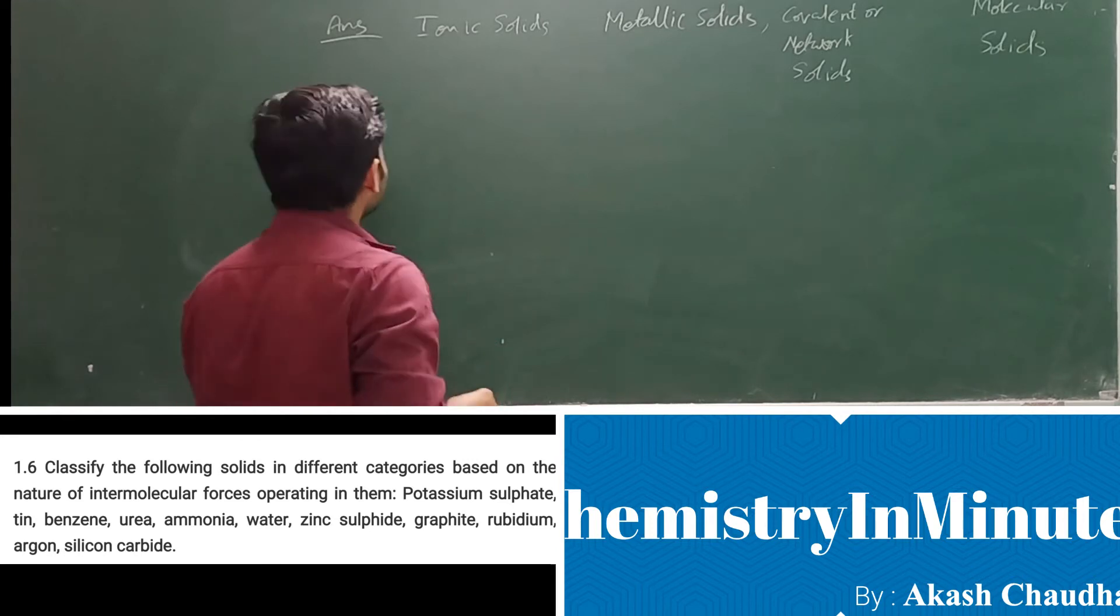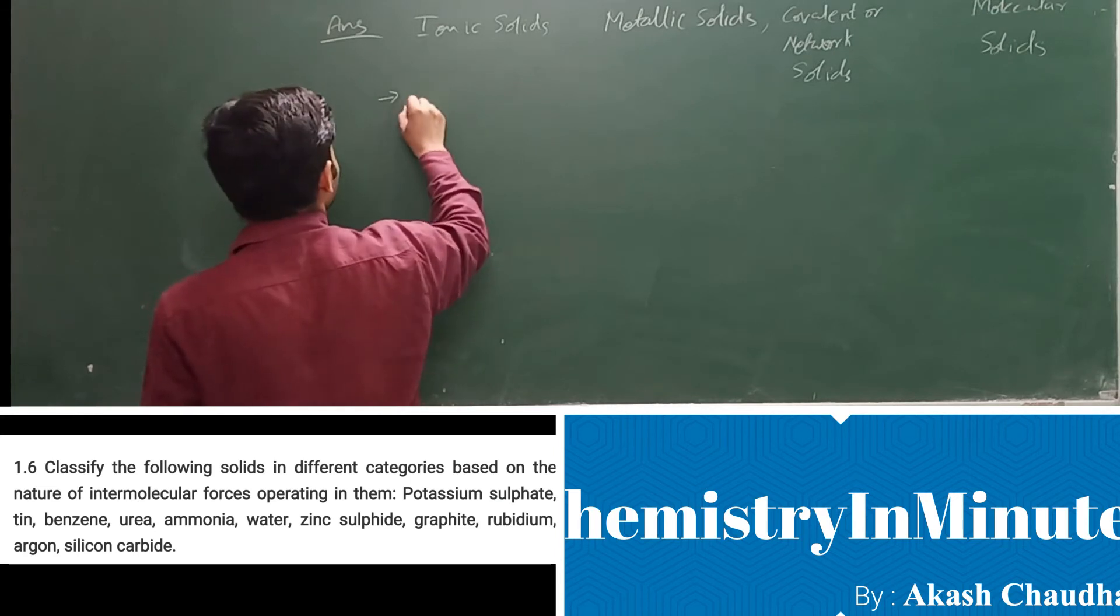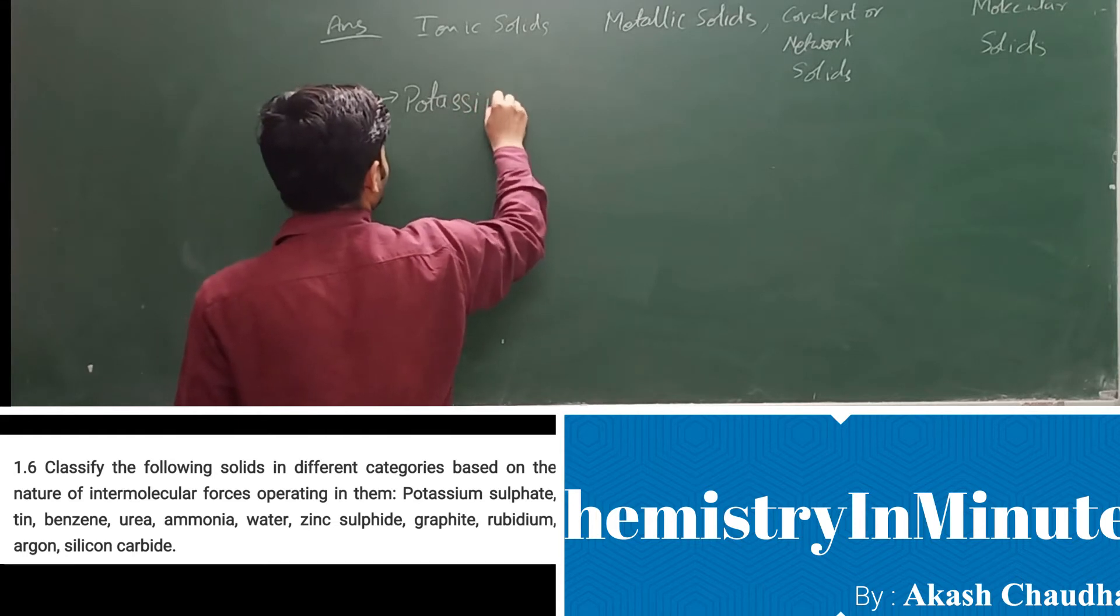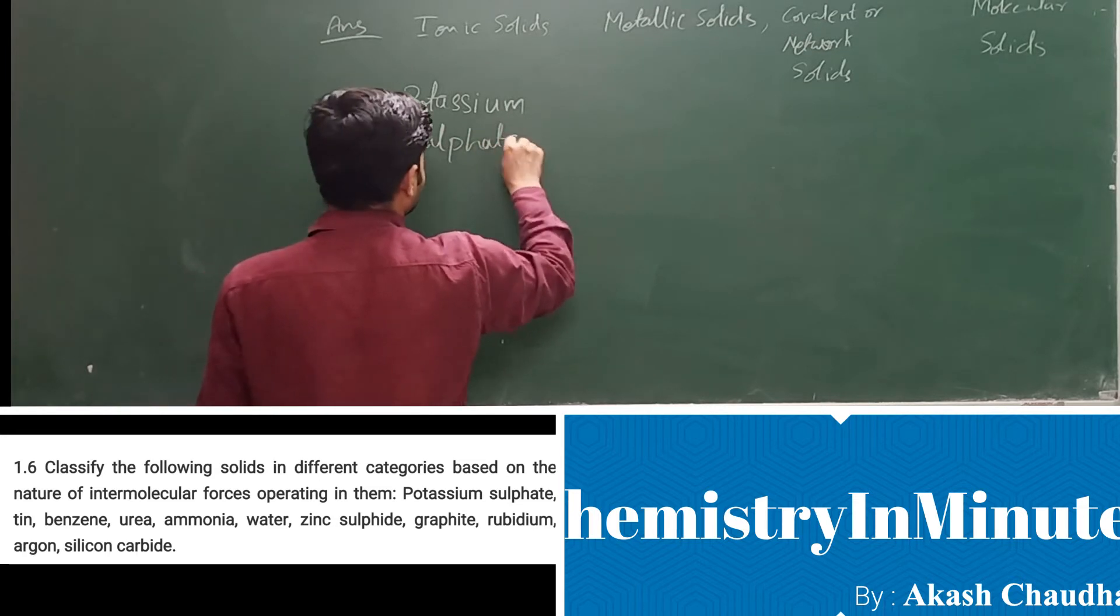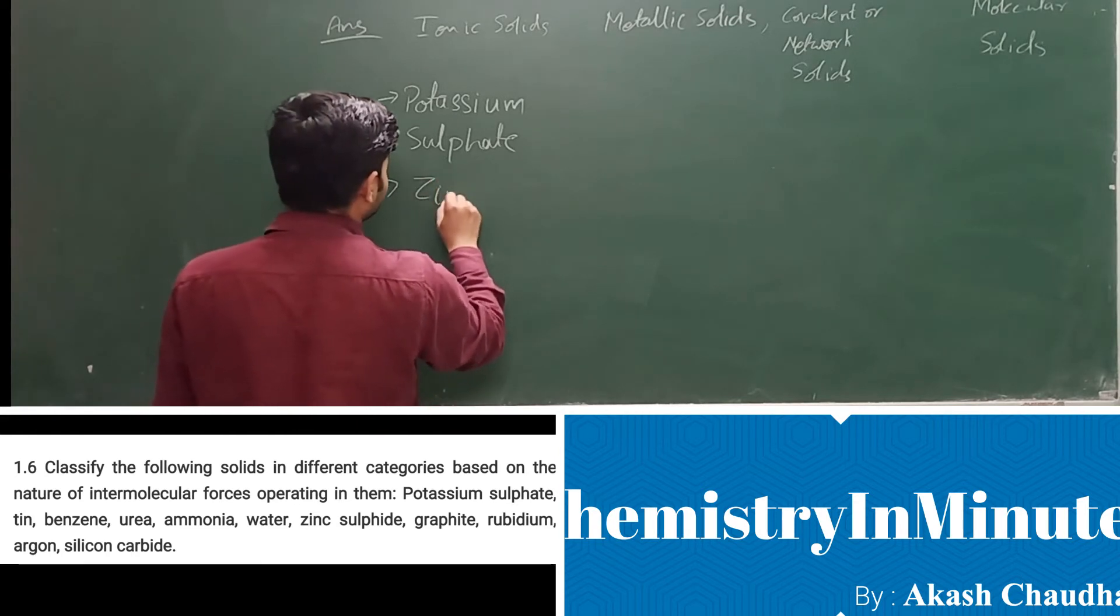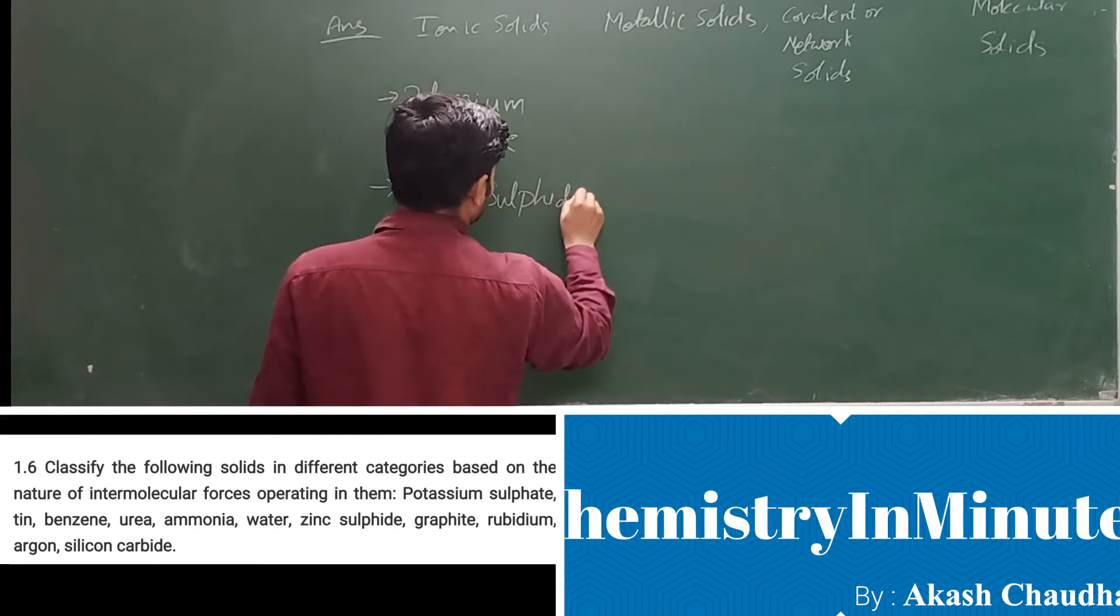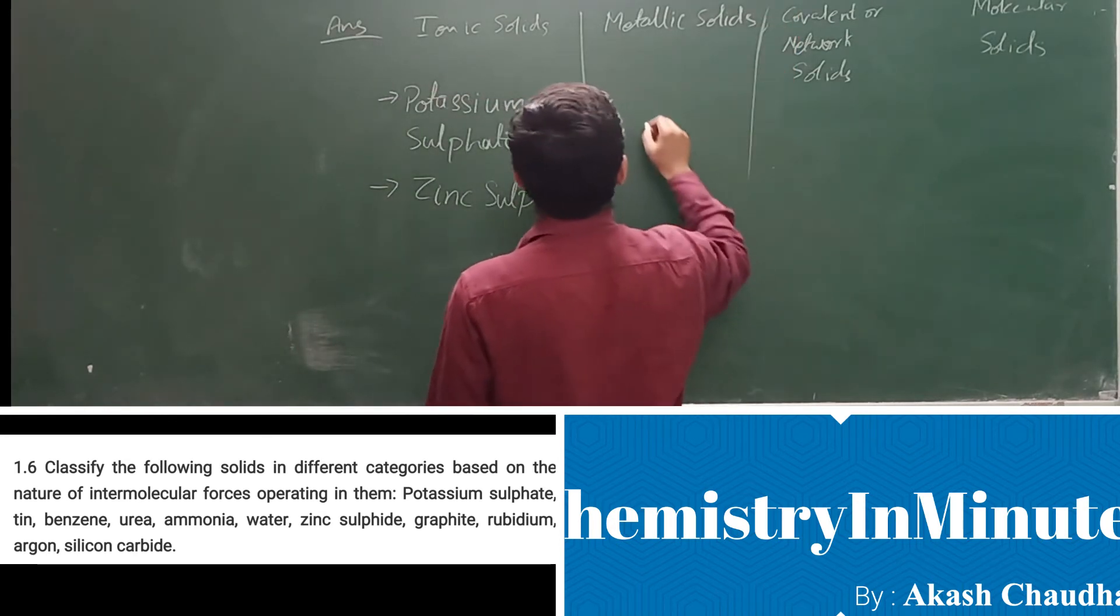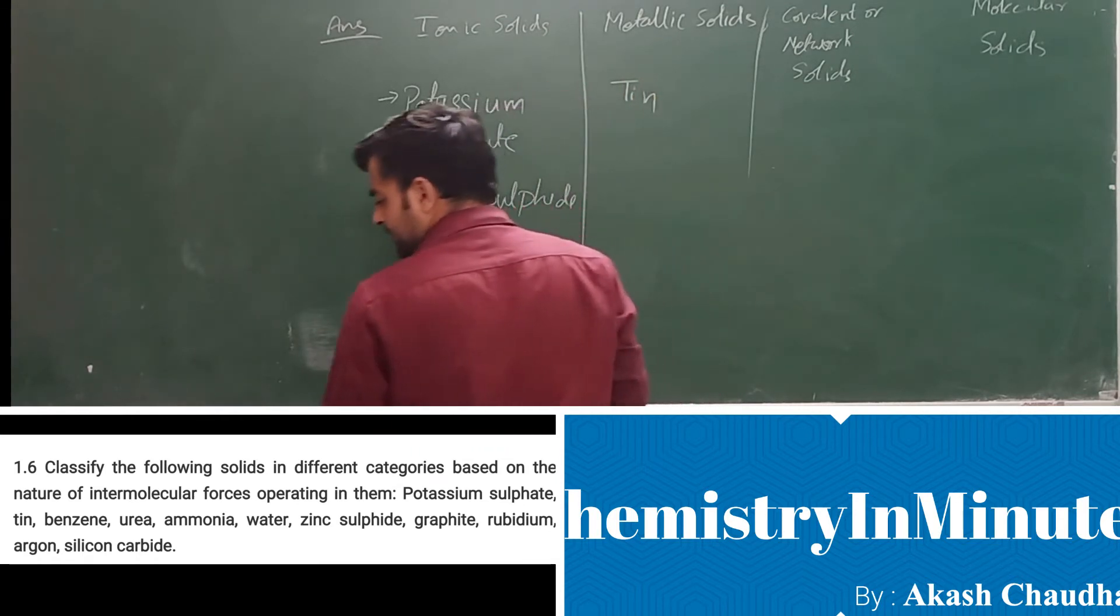In the given solids, the ionic solids are potassium sulfate and zinc sulfide. The metallic solids are tin and rubidium.